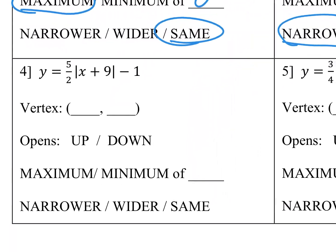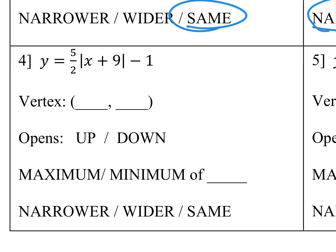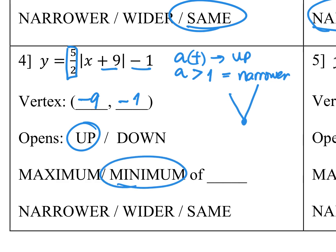Number 4: Y is equal to 5 over 2 times the absolute value of X plus 9 minus 1. A equals 5 over 2, which is greater than 1 and positive, so the graph opens up and is narrower. The vertex is located at negative 9 and negative 1. Since it opens up, the vertex is at its minimum with a minimum value of negative 1. Because A is greater than 1, the graph becomes narrower.